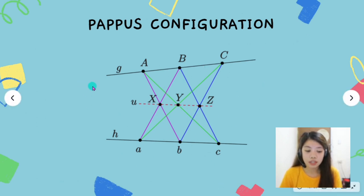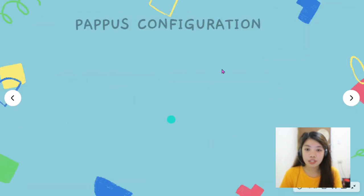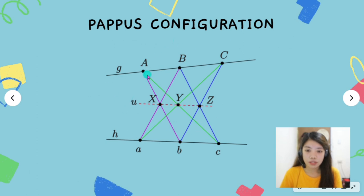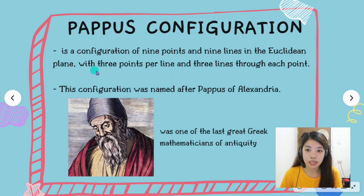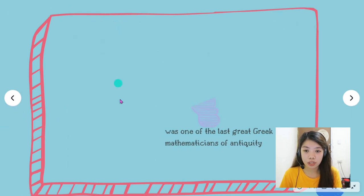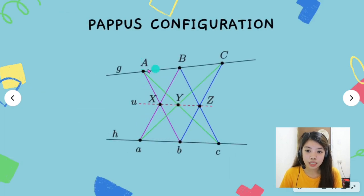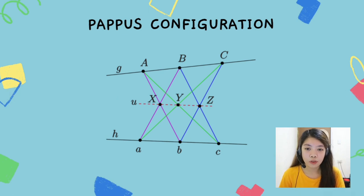Based on the definition, the Pappus configuration consists of 9 points and 9 lines. As you can see here, there are 9 points and 9 lines — including lines in pink, green, and blue. It also has 3 points per line and 3 lines through each point, which is correct. In each point there are 3 lines, and on each line there are 3 points. For example, line G has points A, B, and C, and so on and so forth.